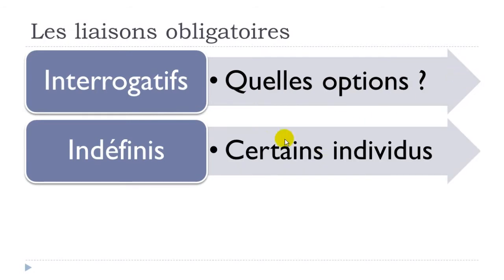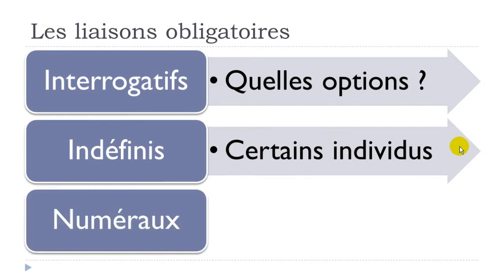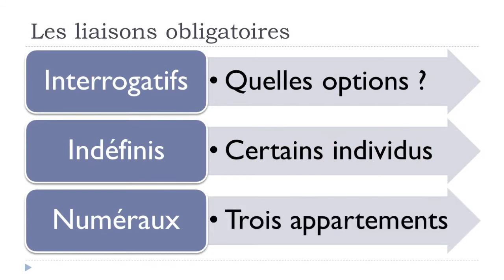The same rule applies to les indéfinis. Here 'certains' is in plural form, and 'individus' (individuals) starts with a vowel: certains individus. And for numbers — I took 'trois' (three) because it ends with S. 'Appartements' starts with a vowel, so you make the liaison: trois appartements. In all these cases you should make the liaison.